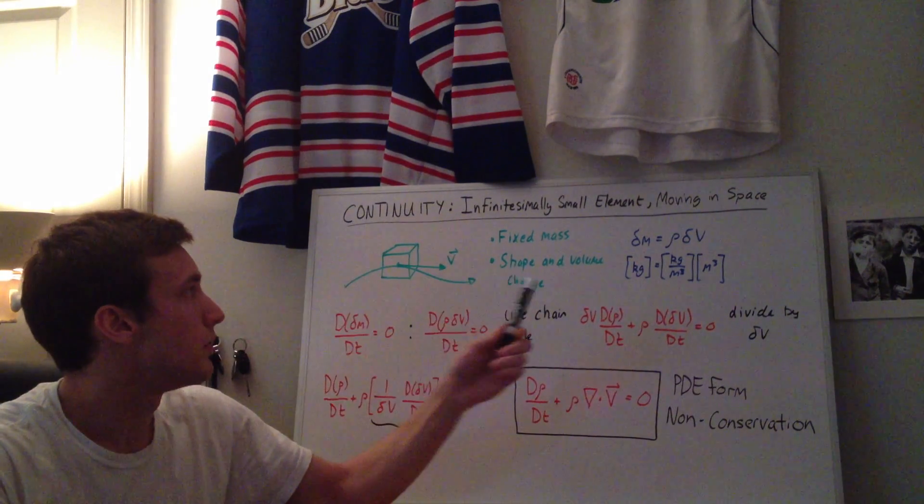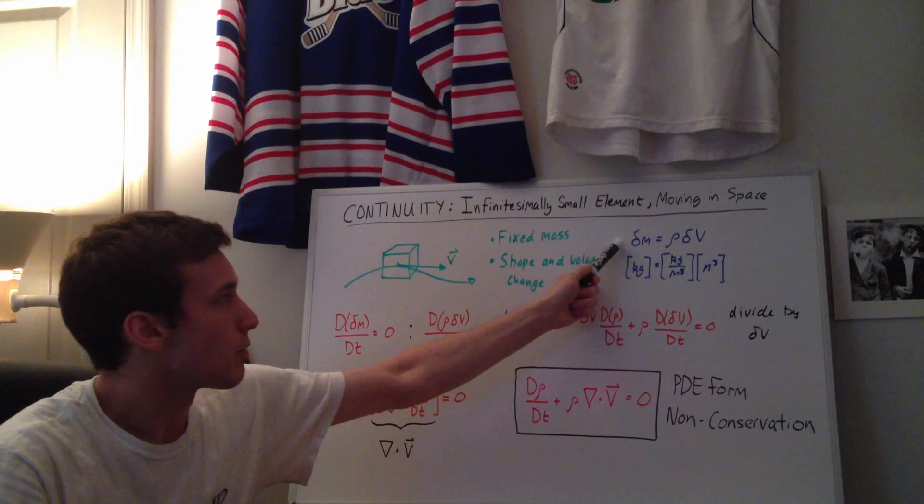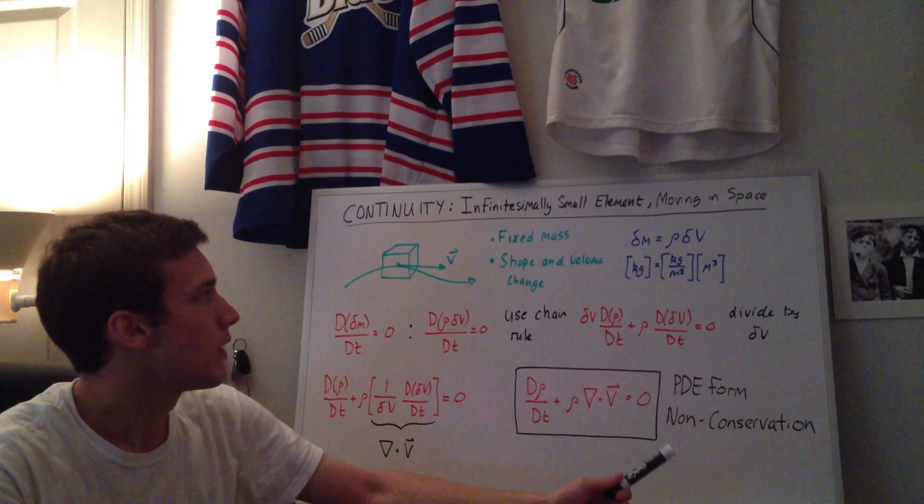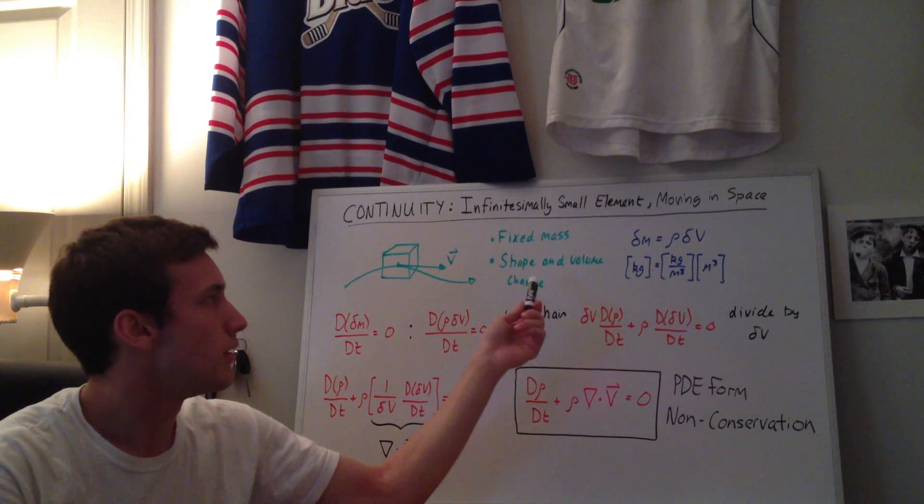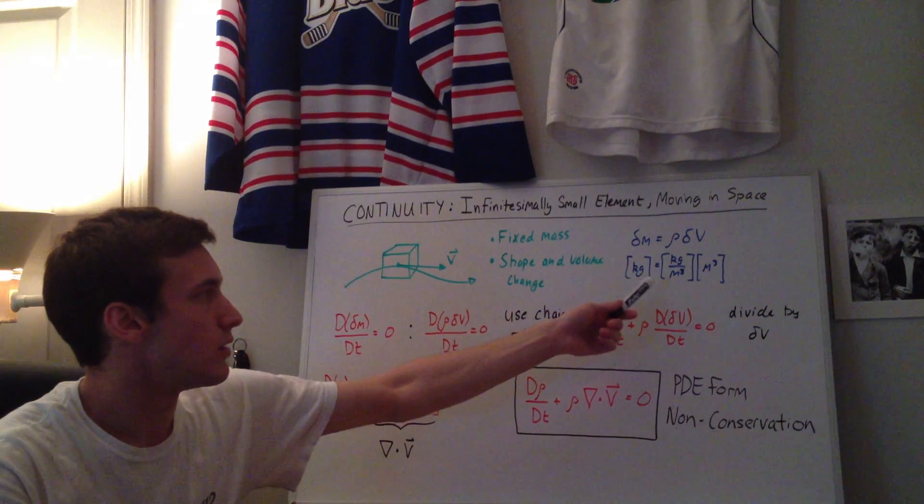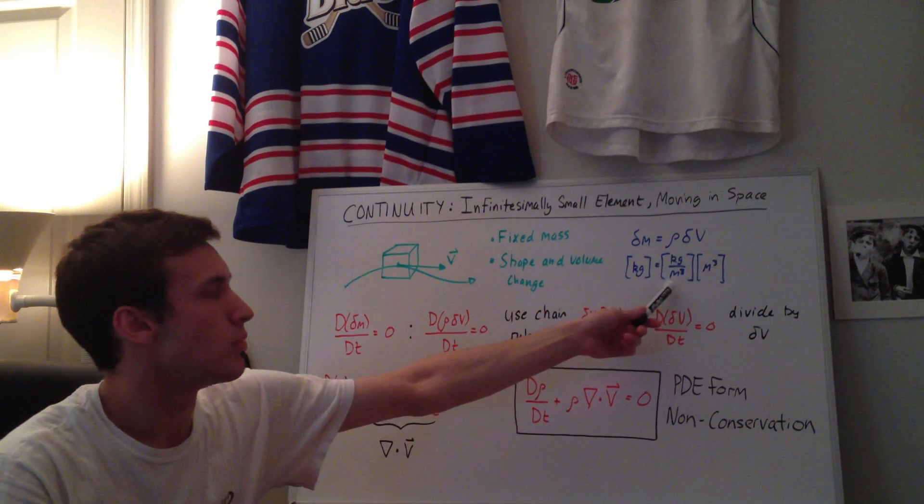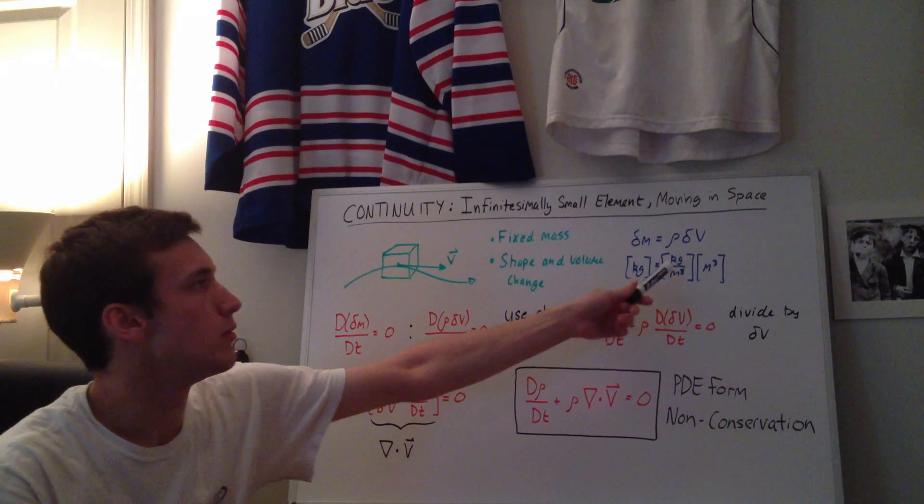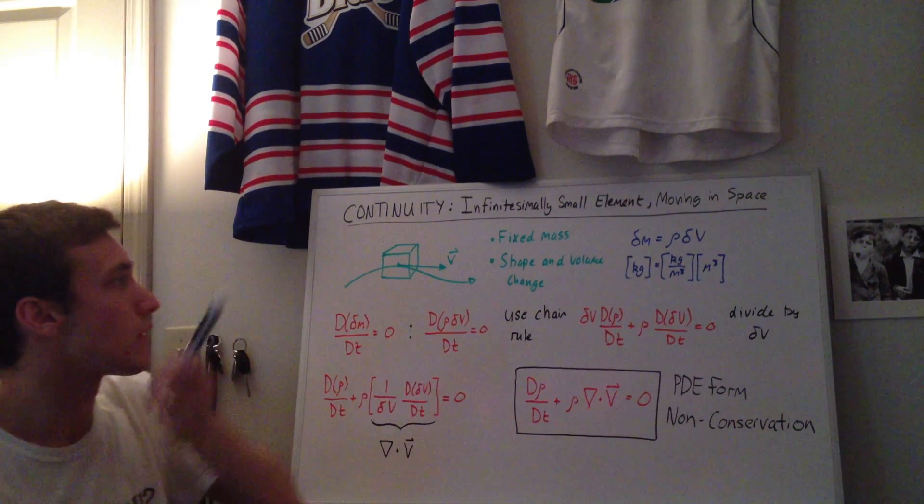So I denote the mass by this dm, the density is rho and the volume is dv, and doing a unit calculation you can see that it checks out. The density is kilograms per meter cubed, the volume is meters cubed, these cancel out, and then you end up with the mass.